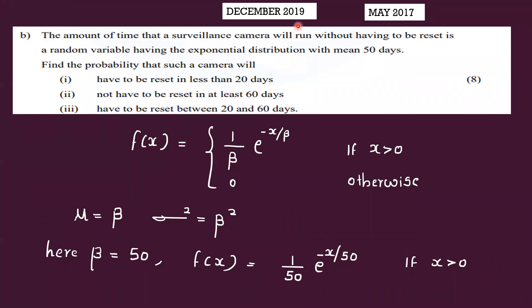The amount of time a surveillance camera will run without having to be reset is a random variable having the exponential distribution with mean 50 days. Find the probability that such a camera will have to be reset in less than 20 days, not have to be reset in at least 60 days, and has to be reset between 20 and 60 days.